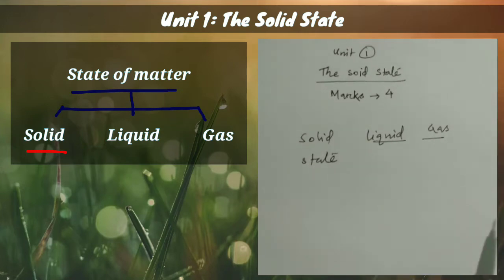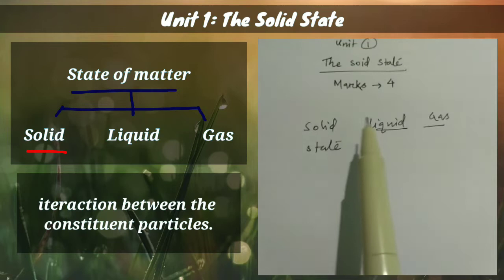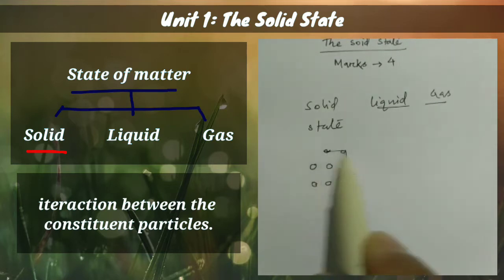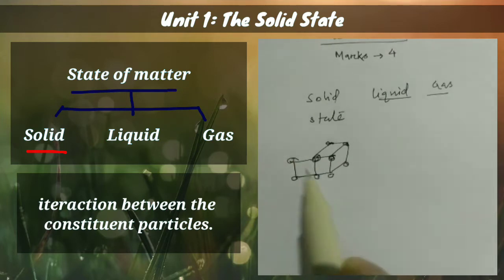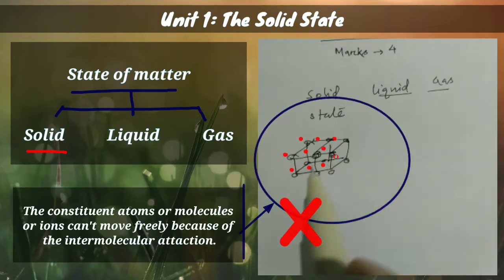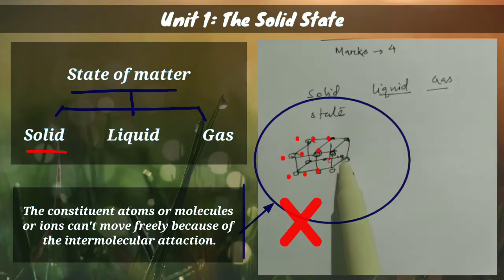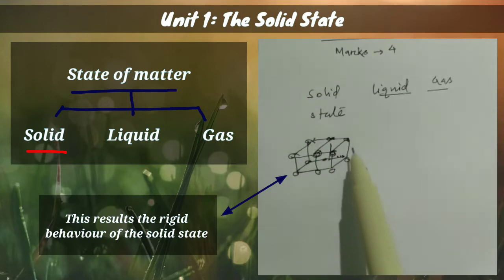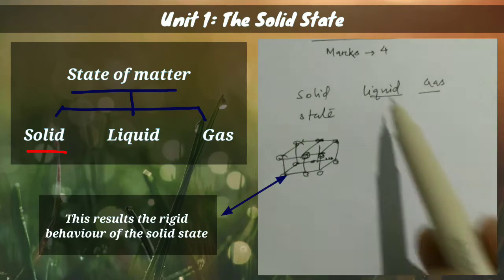The states are differentiated by the interaction between the constituent particles. In the case of solid state, the particles are at fixed positions — they cannot move freely. They can only vibrate or oscillate about their mean positions. This behavior of the constituent particles gives the solid its rigid behavior or property.